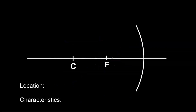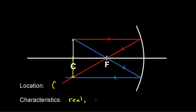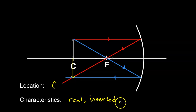Now let's take a look at a situation where the object is at the center of curvature. Our red line is parallel to the optical axis and goes through the focal point. The blue line goes through the focal point and is parallel to the optical axis. We notice that our image is at location C — the center of curvature. The image here is real, meaning if we put a piece of paper there we would get an image. It is inverted — upside down — and it's the same size.